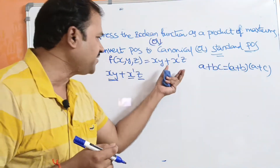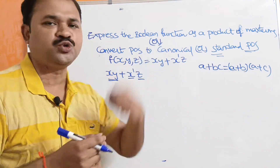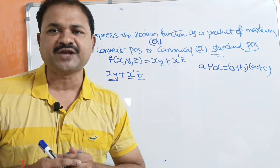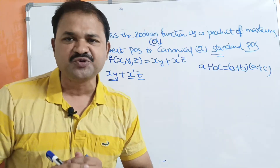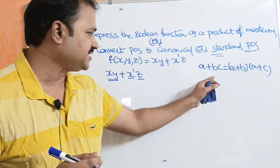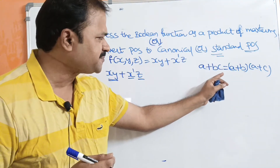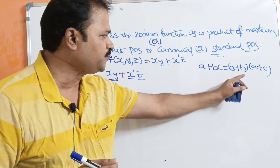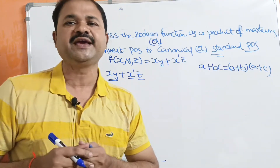We convert using the distributive law: a + bc = (a + b)(a + c).